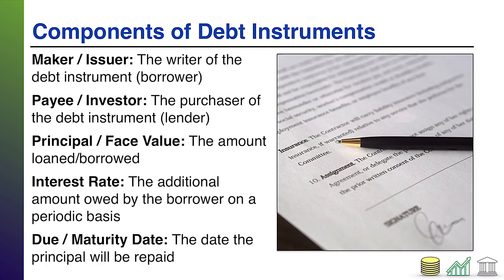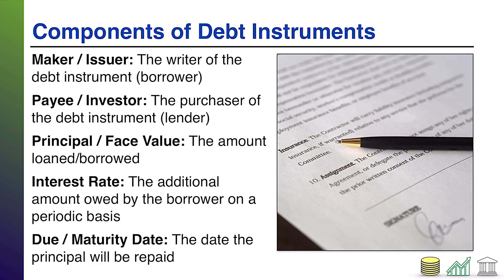Just so you're aware, if you ever see debt instruments in a future business class or in real life, there are standard items contained on every debt instrument. The terminology differs depending on the type, but they mean the same thing. For instance, maker or issuer: if it's a note payable, we're usually dealing with a maker; if it's a bond — a debt instrument on the open market — we're talking about an issuer. Either way, this is the writer of the instrument, the person borrowing the money.